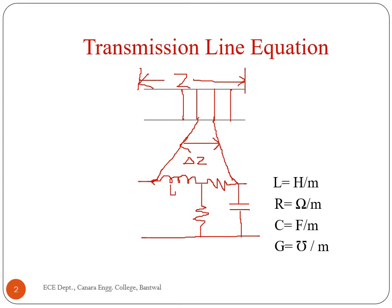The four parameters are inductance, resistance, conductance, and capacitance. Since we are talking about small length delta z of the line, the unit of inductance is henry per meter, unit of resistance is ohm per meter, unit of capacitance is farad per meter, and unit of conductance is mho per meter.